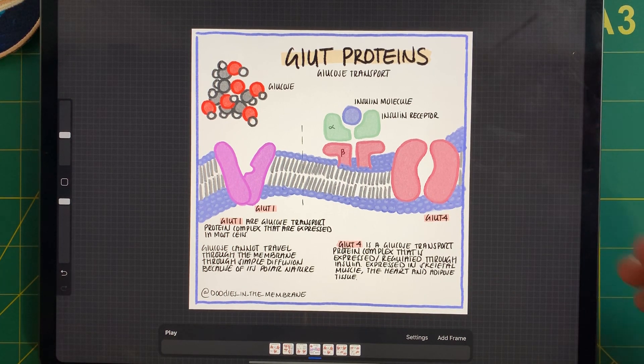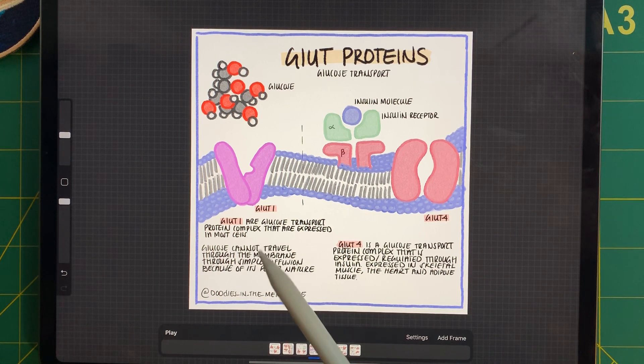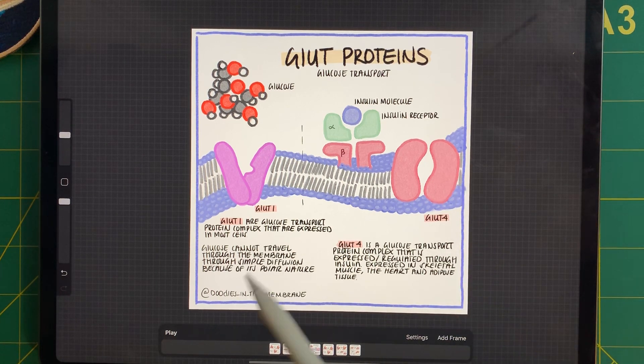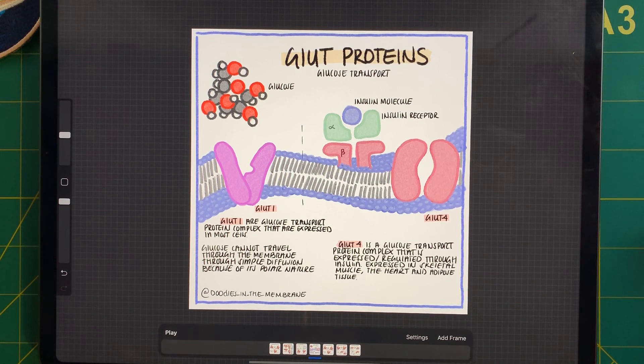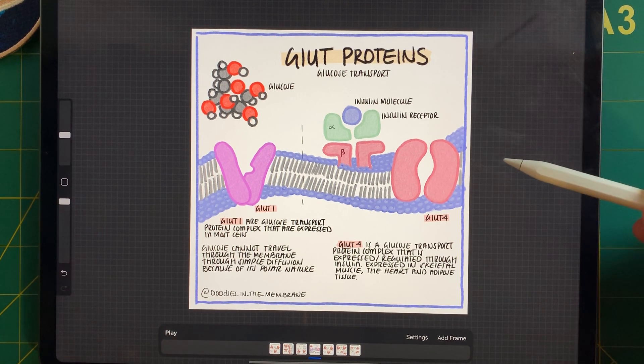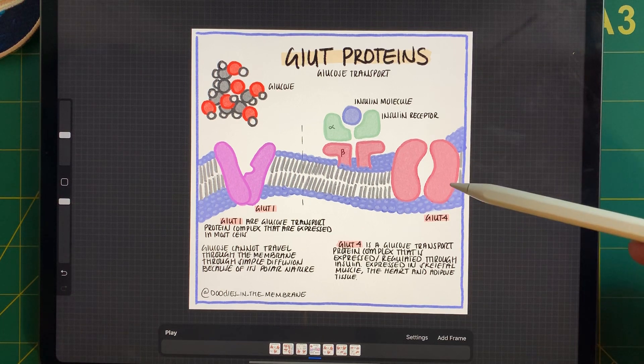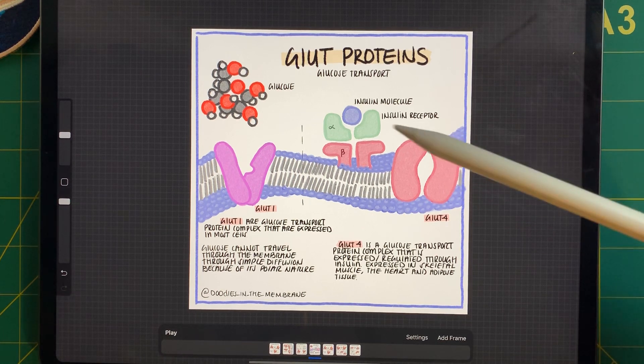Now, there's multiple subtypes, but I kind of just wanted to look at two. And in this case, I wanted to look at GLUT1 and GLUT4. GLUT1 protein complexes are kind of expressed in all cells, and they help with the transport of glucose into the cytoplasm or into the cell. Whereas with GLUT4 protein complexes, these are expressed from a hormonal response to insulin.